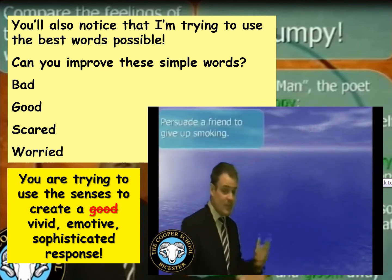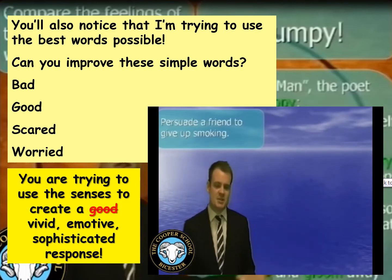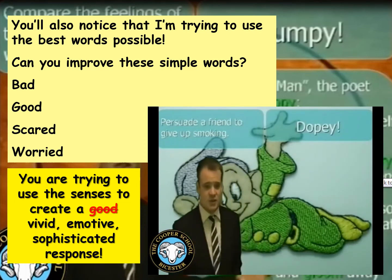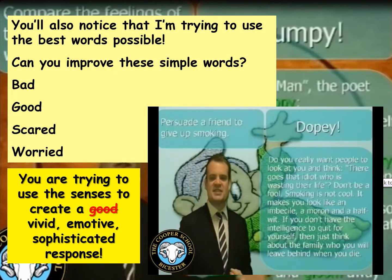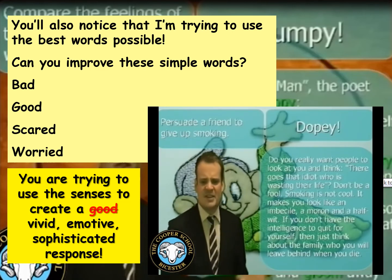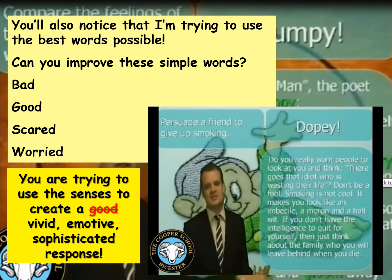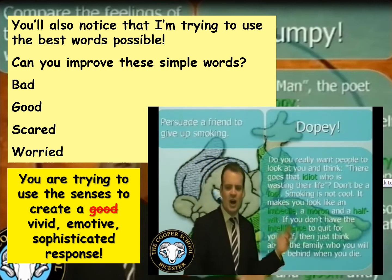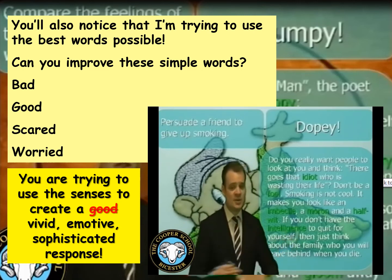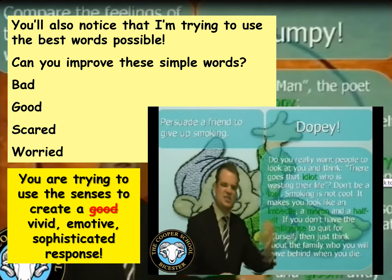Here's another example from Paper 1 Section B: persuade a friend to give up smoking. Somebody who smokes is dopey. Instead of saying 'you are dopey,' I'm going to say: 'Do you really want people to look at you and think, there goes that idiot who is wasting their life? Don't be a fool. Smoking is not cool. It makes you look like an imbecile, a moron, and a halfwit. If you don't have the intelligence to quit for yourself, then just think about the family that you will leave behind when you die.' I've got idiot, fool, imbecile, moron, halfwit — and I've also used the antonym, intelligence — all jigsawed together to make my answer more passionate and persuasive.